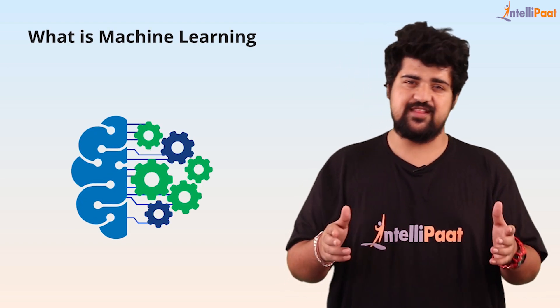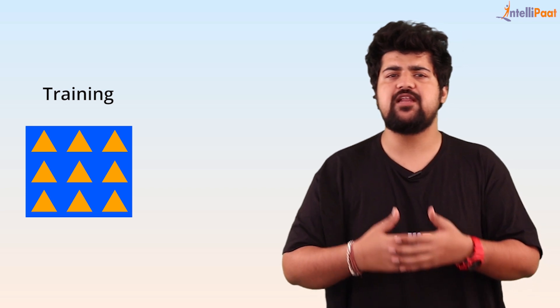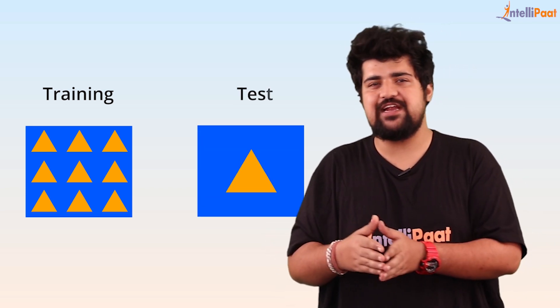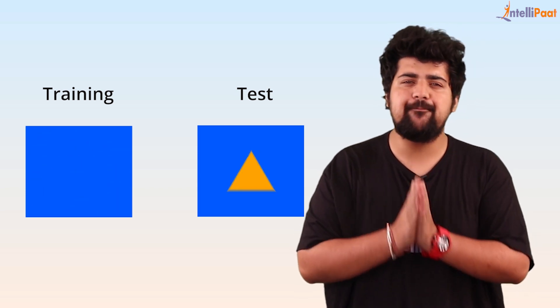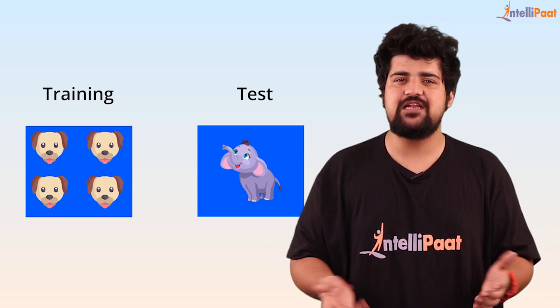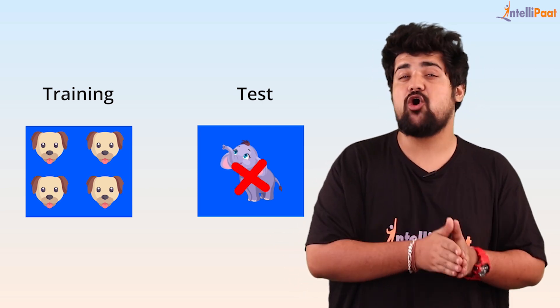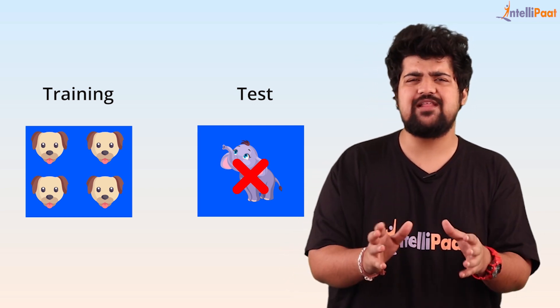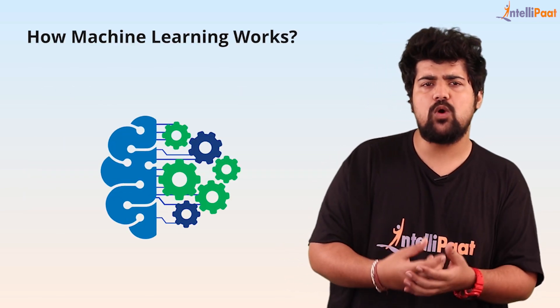Welcome to this session on what is machine learning. Today we'll be going through various examples to understand machine learning better. The first thing you should understand about machine learning is it is the process of providing ample data to a particular machine so that it can predict new kinds of data when it comes in. For example, if you provide ample images of a dog to a machine and then give a new image which could be of any animal, it will be able to tell you whether that's a dog or not.